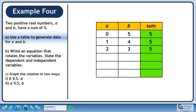A equals 2 and B equals 3 has a sum of 5 as well. A equals 3 and B equals 2 works. As does A equals 4 and B equals 1. Finally, we could have A equals 5 and B equals 0.